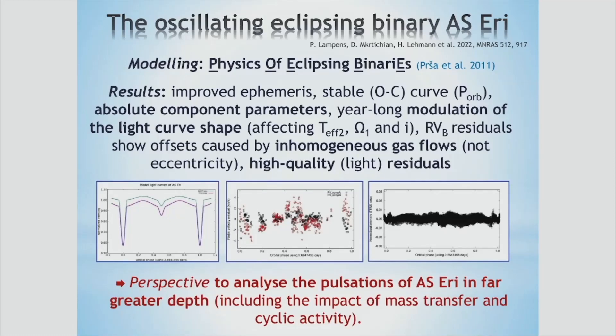Some of the results that I'm showing are improved ephemeris, but also the stability of the orbital period over a long time, because the O-C — observed minus computed — curve is stable. Also accurate absolute component properties, in the footsteps of Johannes Anderson many decades ago.